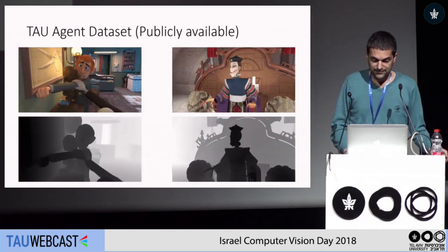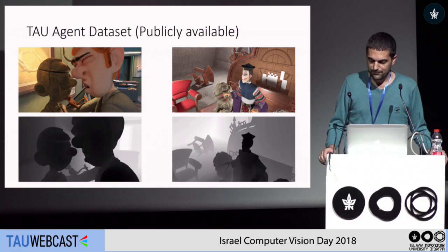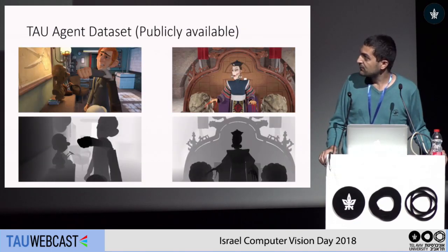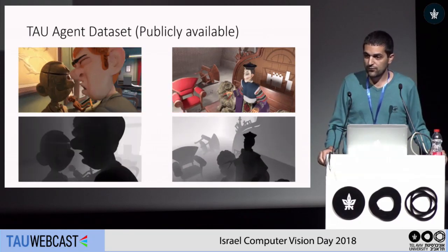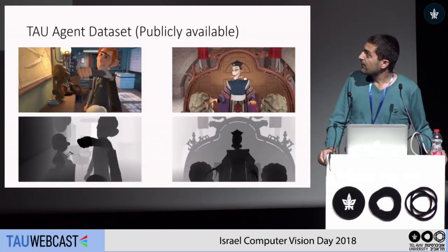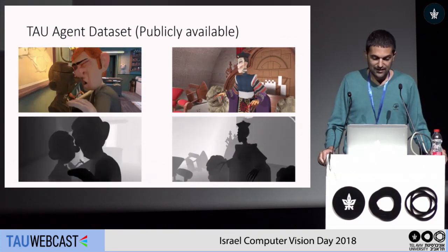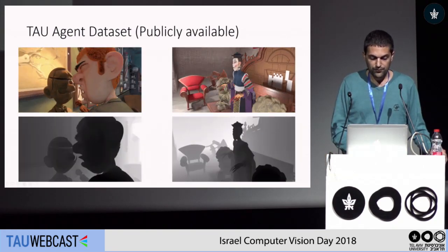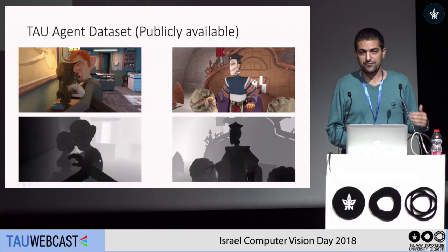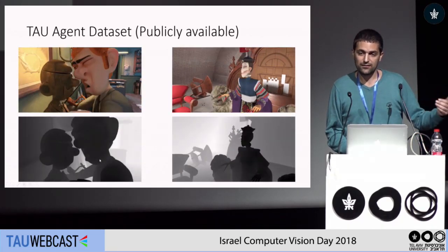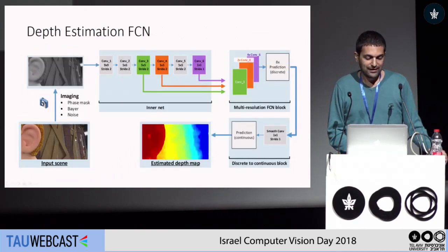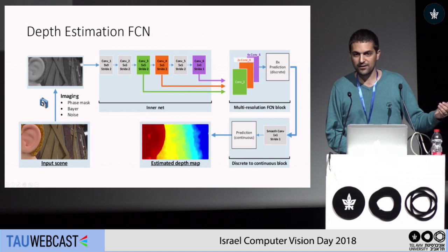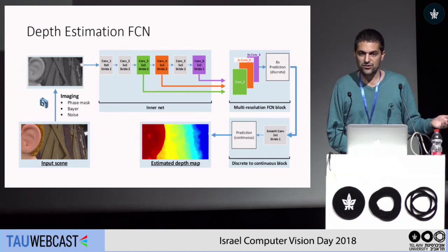These are examples of the Blender video we used — it is available online. We call it the TAU dataset. We give our network both the RGB colors and the depth map, and the first layer of the network learns how to do the imaging. This layer is differentiable, and therefore when we do backpropagation we can also update the parameters of the phase mask.